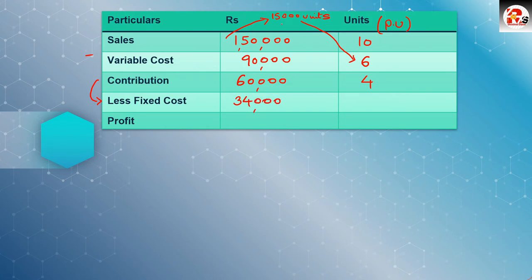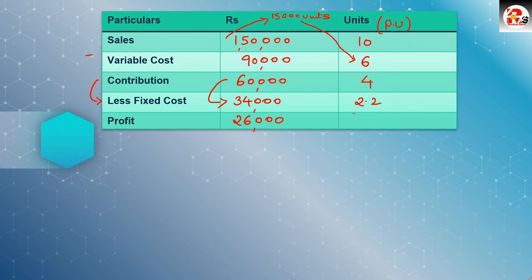Contribution is 60,000 in amount and Rs. 4 per unit. Fixed cost: 34,000 total, and per unit that comes to approximately 2.2. So: 60,000 minus 34,000 gives profit of 26,000. Per unit: 4 minus 2.2 gives 1.8. So profit is 26,000. This is the full format calculation which you should understand clearly.